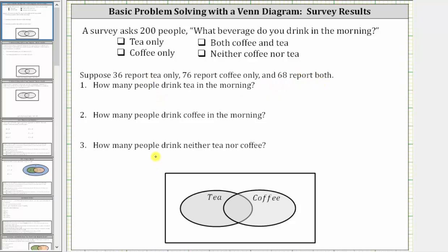We're asked to answer three questions. Let's first organize the information in the Venn diagram shown below, where the tea set represents the tea drinkers and the coffee set represents the coffee drinkers. Because 36 report tea only, these 36 people are in the tea set but not in the intersection — since the intersection represents people who drink both tea and coffee. These 36 people belong outside the intersection.